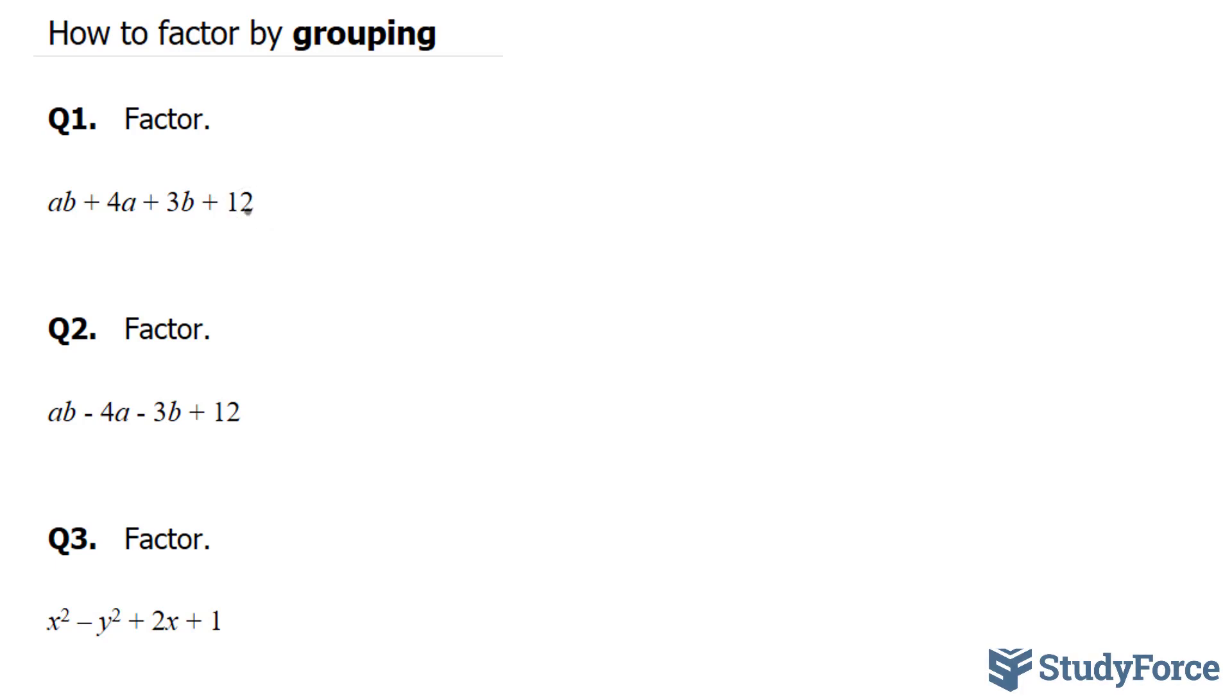So what we can do here is we can factor out these two and factor out these two individually. Let's start with the first two. Factoring out an A gives us B plus 4. And in the last two terms, factoring out a 3, a positive 3, gives us B plus 4.